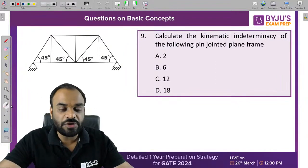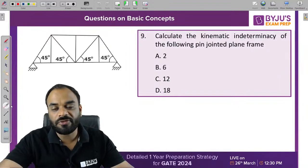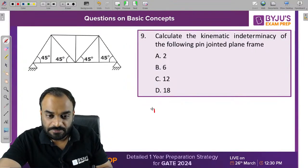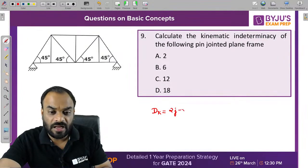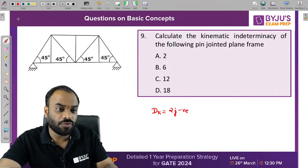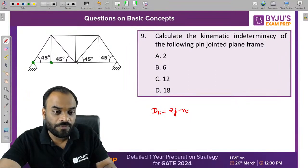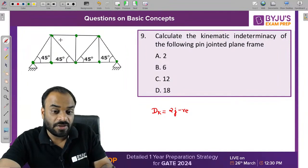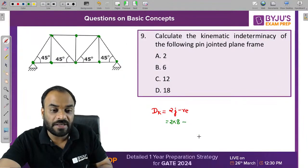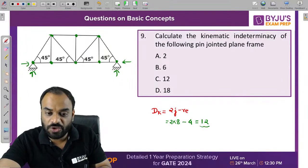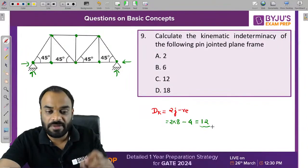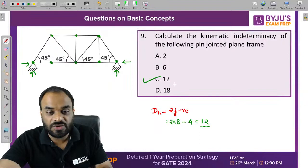We need to find the kinematic indeterminacy (DK) of a 2D truss. The formula is 2J minus RE. Counting joints: 1, 2, 3, 4, 5, 6, 7, 8 — total 8 joints. So 2 into 8 equals 16. Reactions: 1, 2, 3, 4 — total 4. So 16 minus 4 equals 12. The correct answer is C — 12 joint displacements are possible.